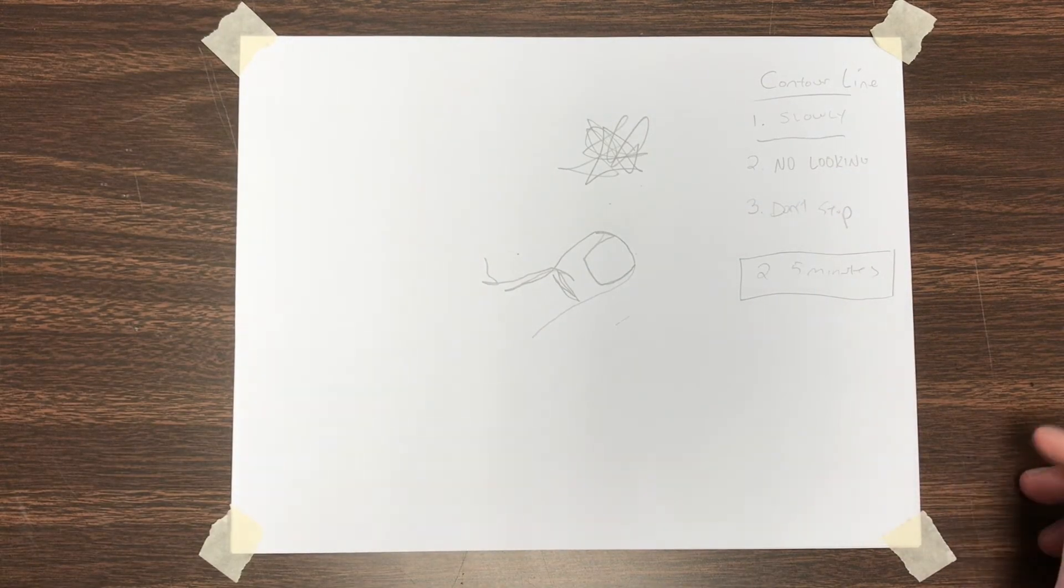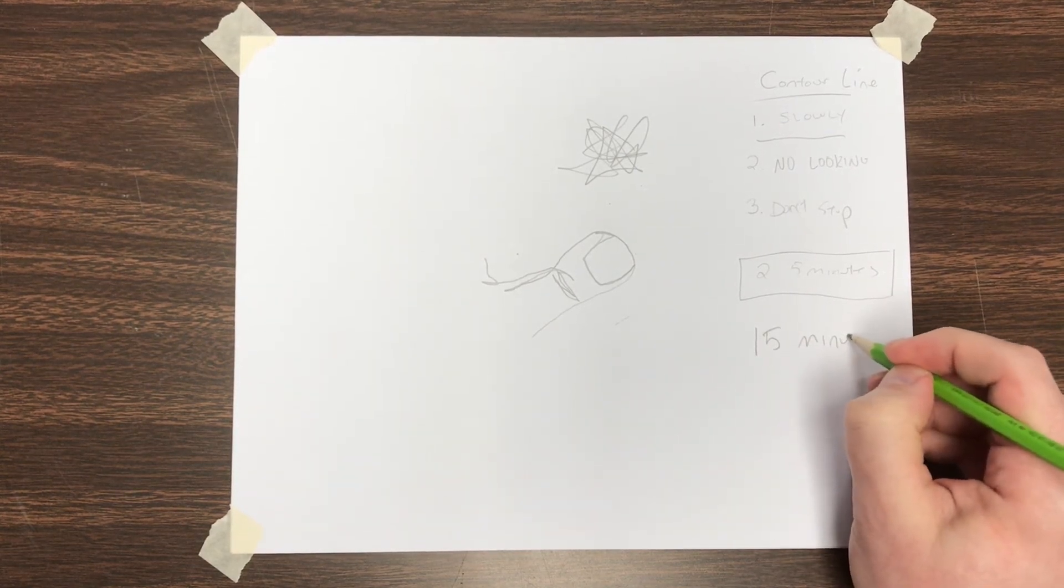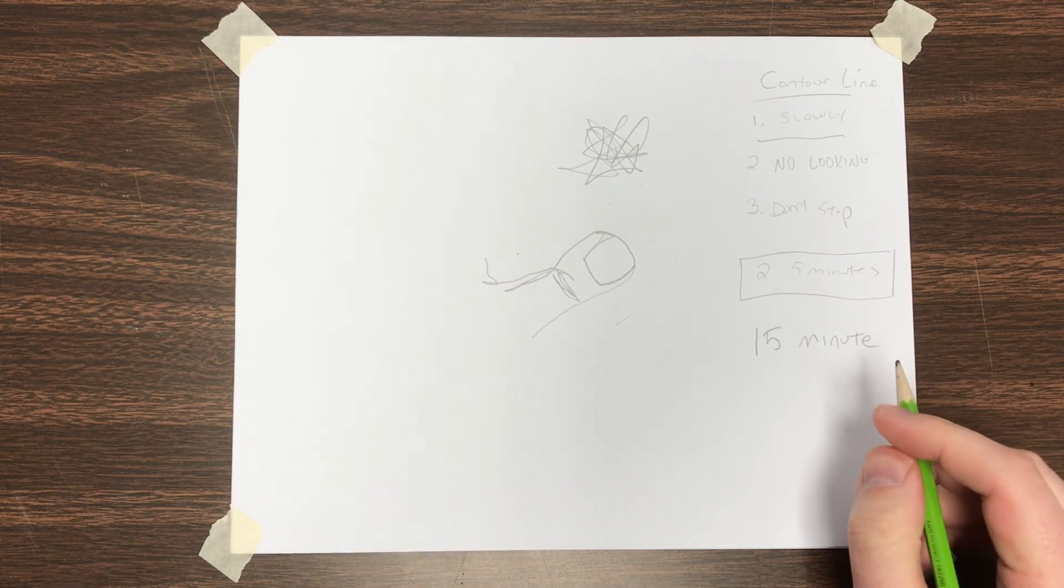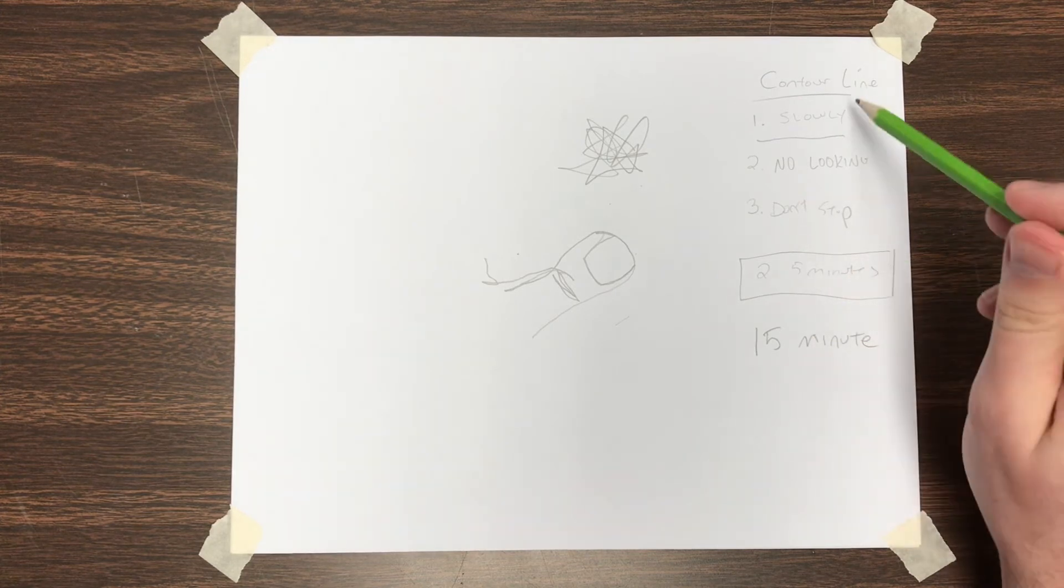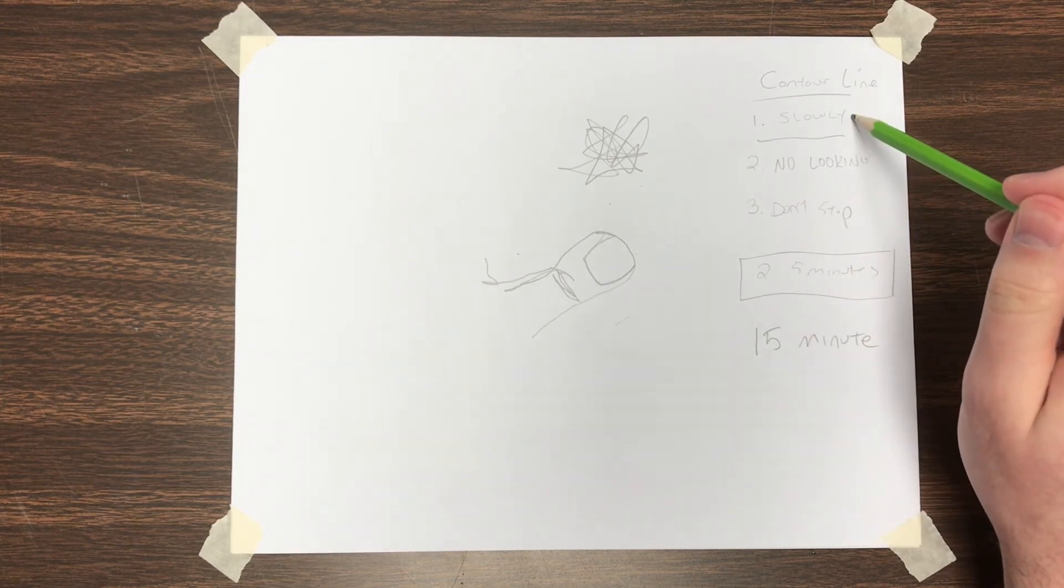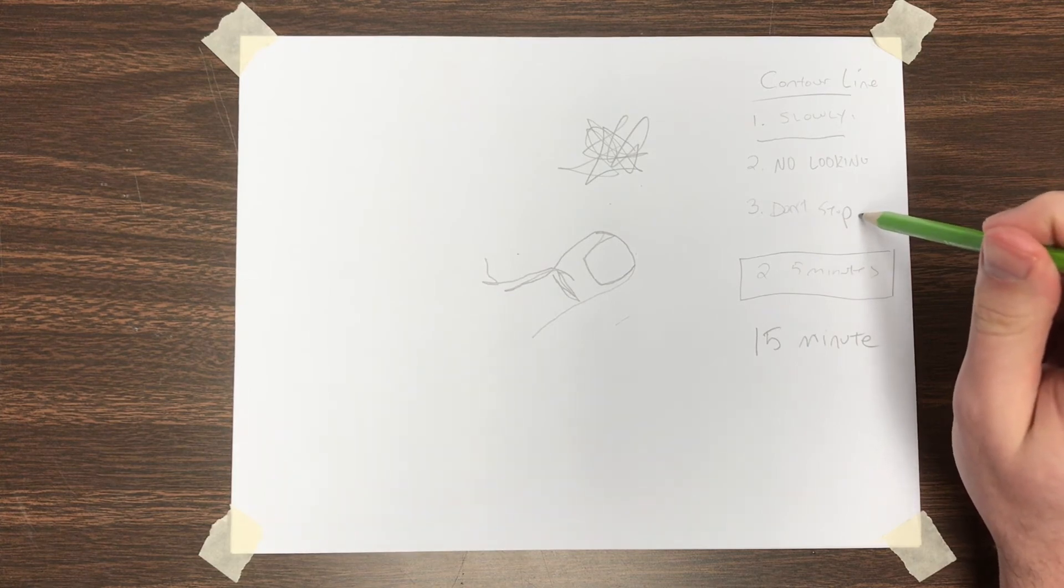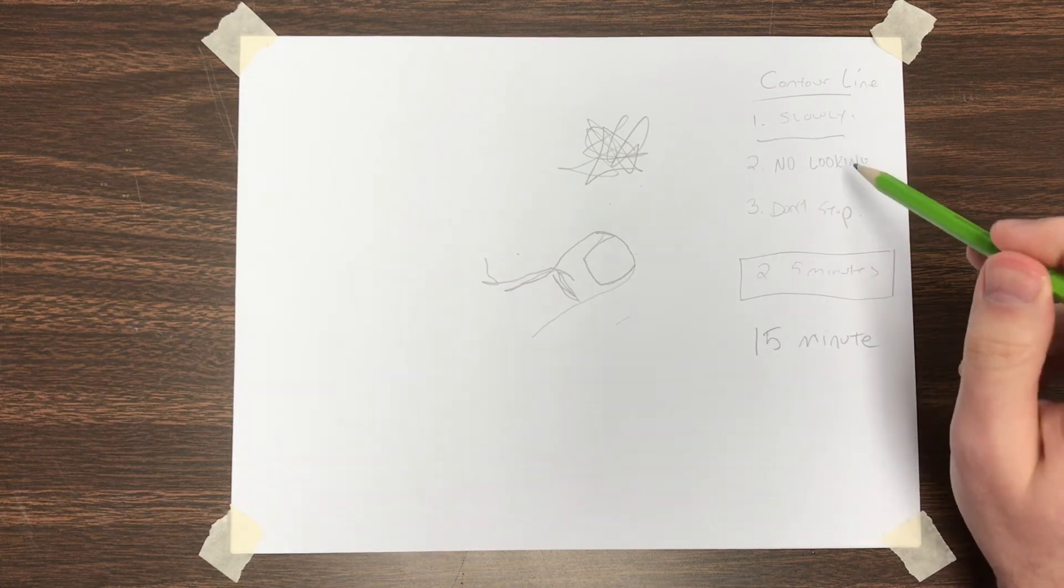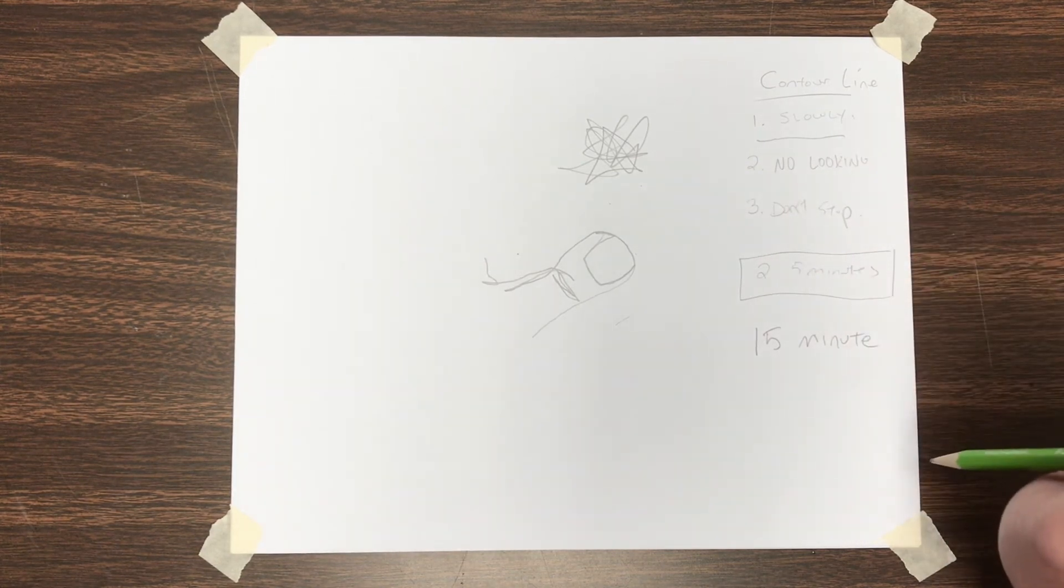Then for your final drawing, you're going to do a 15-minute drawing of your hand. Now, for the 15-minute drawing, you're still going to draw slowly. You're still going to keep the pencil on the page. You can lift the pencil up. That'll be fine. So in this 15-minute drawing, you can lift your pencil up. And in the 15-minute drawing, you can look at the paper.